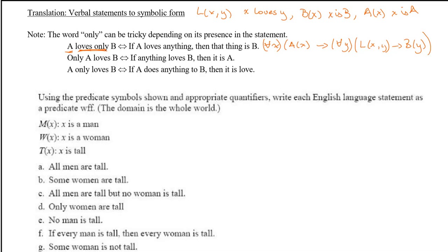The second sentence: 'Only A loves B.' We could verbally say: if anything loves B then it is A. Symbolically, we write: for all x, if L(x,y) — meaning x loves B — then A(x). So the 'only' at the beginning flips the condition to be on the lover rather than the loved.